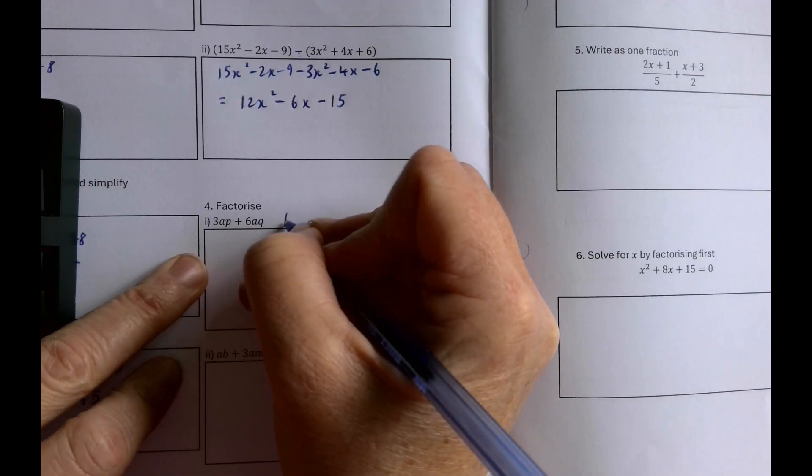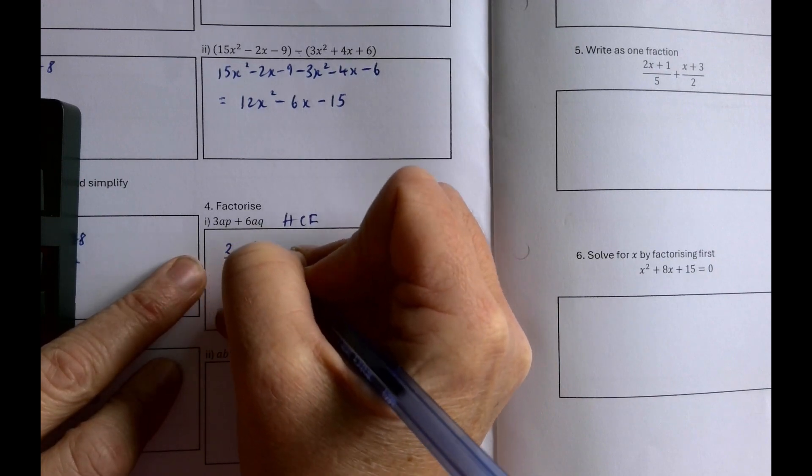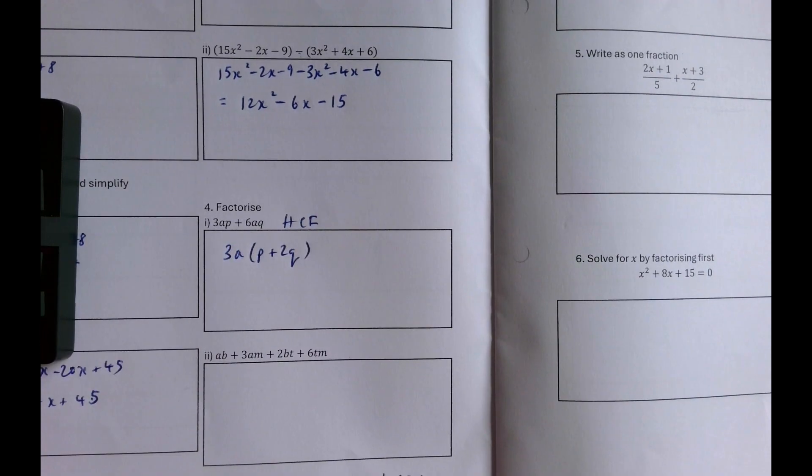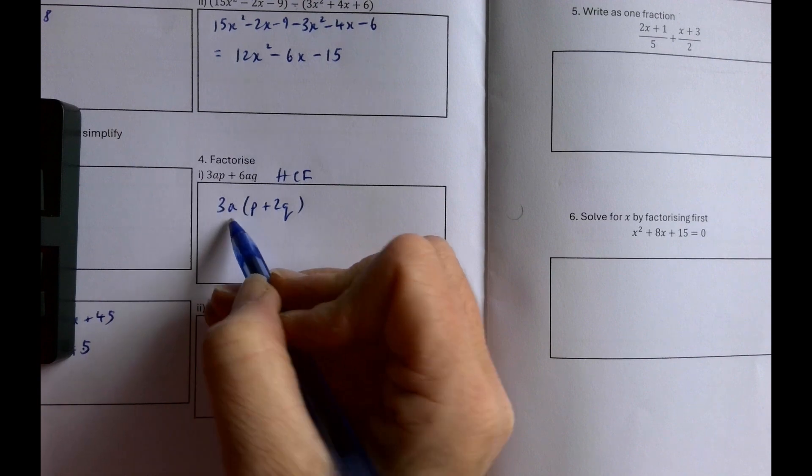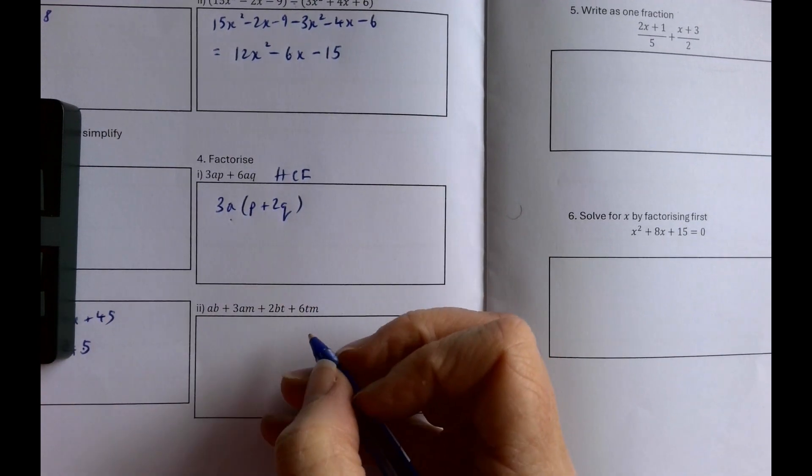Factorize. So take out what's common. This is the highest common factor. 3a is in common, by p plus 2q. So once I see what's in common, I take it outside the bracket. Everything else goes inside the bracket.